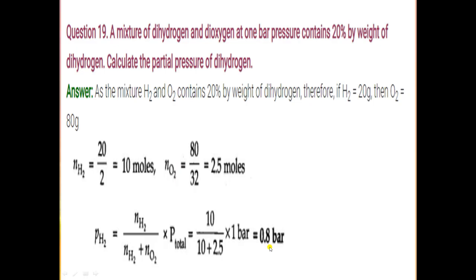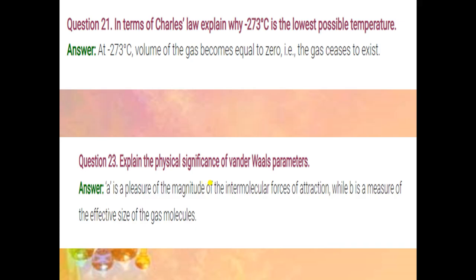This is question number 19. Question number 21: in terms of Charles' Law, explain why minus 273°C is the lowest possible temperature. At minus 273°C, the volume of the gas becomes equal to zero, meaning the gas does not exist at that temperature. So this is a hypothetical temperature and that is why minus 273°C is the lowest possible temperature.